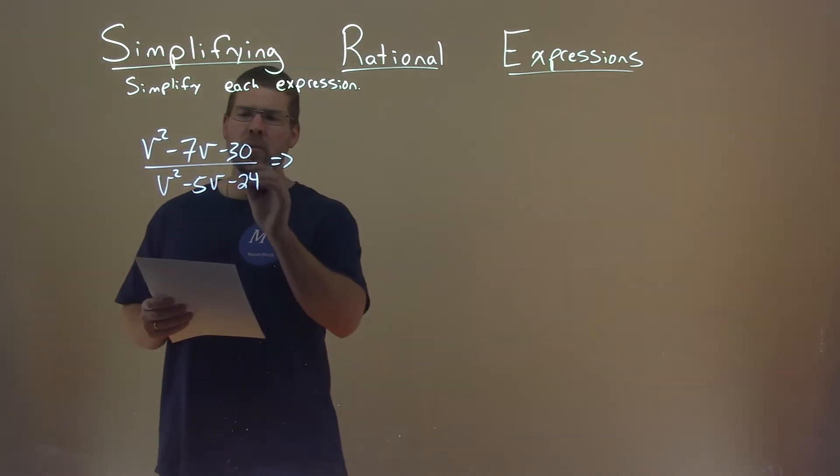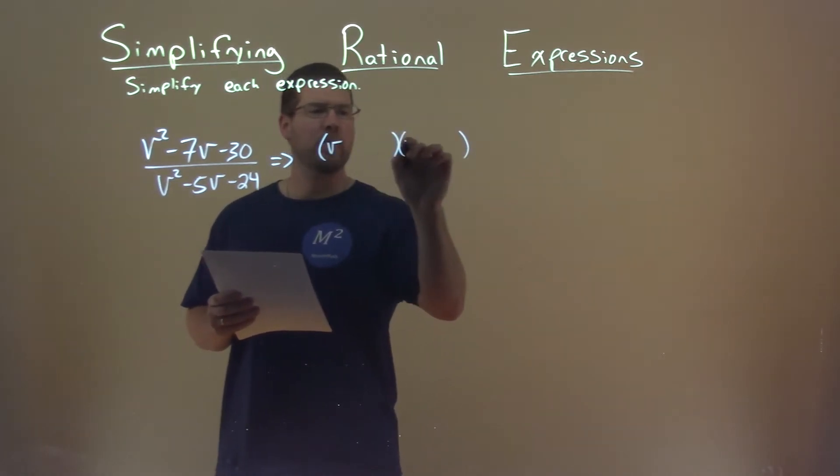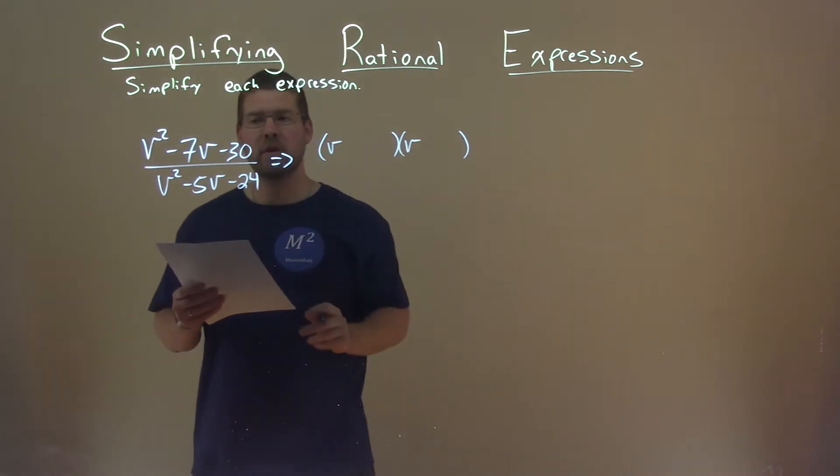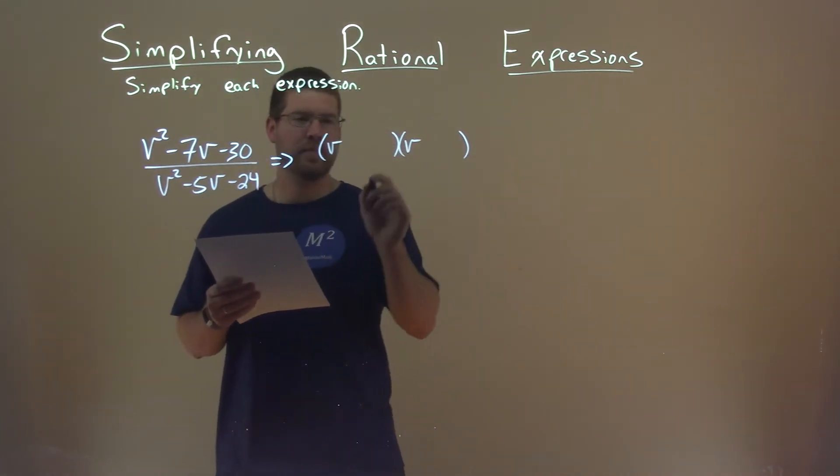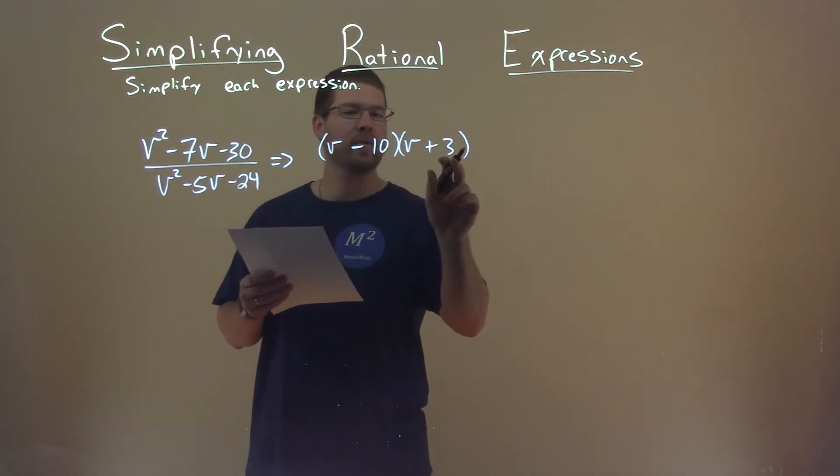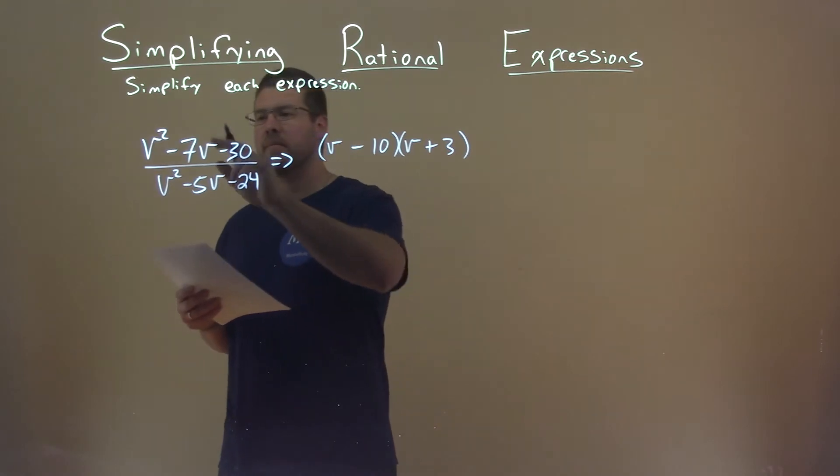Well, the numerator looks like it can be factored. So, we have our form right here, and we ask ourselves, what two numbers multiply to be negative 30 but add to be negative 7? And that's a minus 10 and a plus 3. 3 times negative 10, negative 30. Negative 10 plus 3, negative 7.